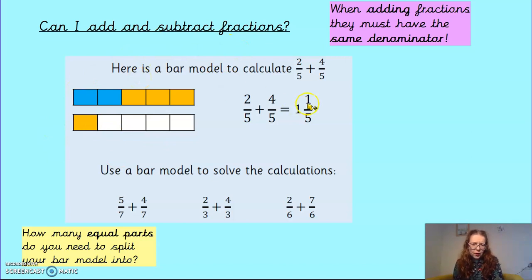And because it's taken me over one whole, I know that I have one whole and then one fifth left over. And I could write that as an improper fraction by going two plus four equals six over five, six fifths.